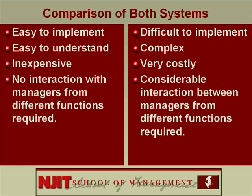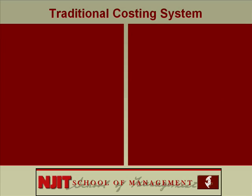Now let's discuss both systems. We'll start with the traditional system and then move on to ABC. How does the traditional costing system work? Let me give you an example. Let's take an auto repair shop. When you take your car in for repairs, how do they cost the job?